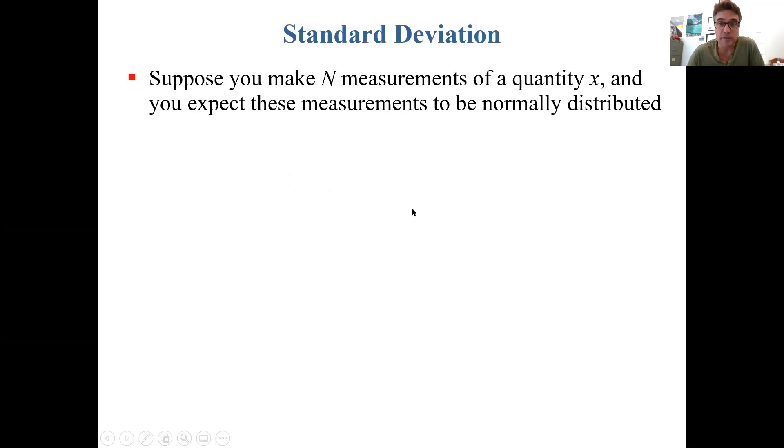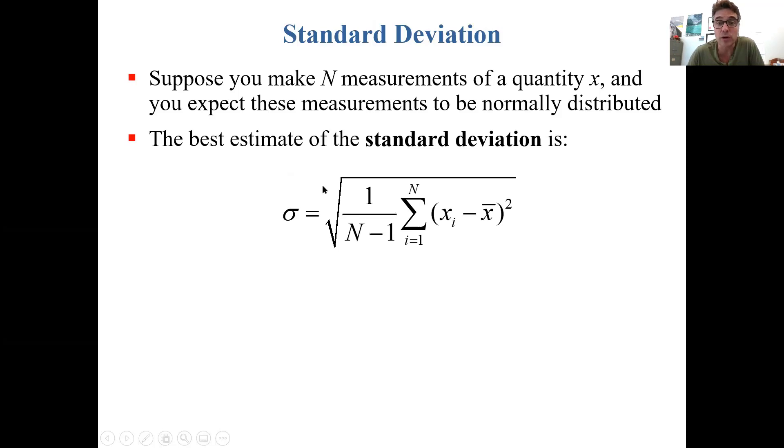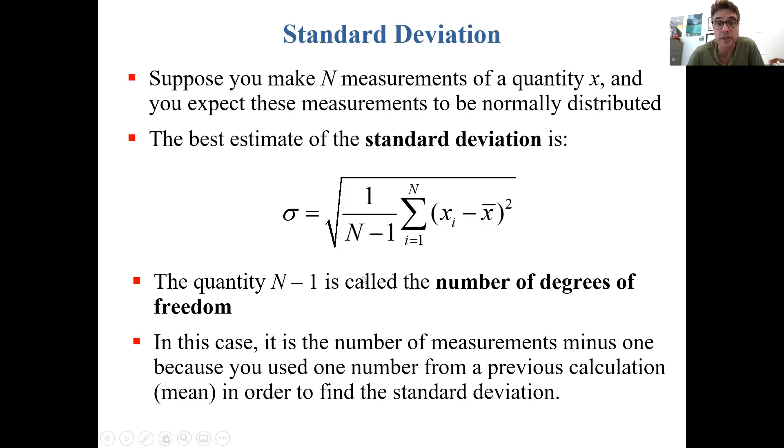Suppose you make n measurements of the same quantity once again. The best estimate of the standard deviation sigma is the square root of 1 over n minus 1 times the sum overall i of x sub i minus x bar squared. The quantity n minus 1 is called the number of degrees of freedom, and in this case it is the number of measurements minus 1 because you used one number from a previous calculation, which was this mean x bar, in order to find this standard deviation.